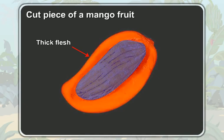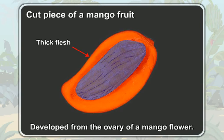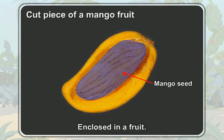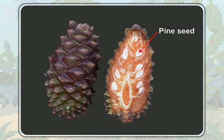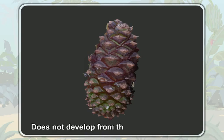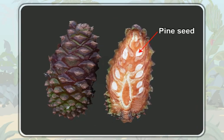The mango seed is surrounded by the thick flesh of a mango fruit. Actually, the thick flesh of a mango fruit is derived from the ovary of a mango flower. So, the mango seed is enclosed in a fruit. Now, look at this pine seed. It is enclosed inside a structure that has scales. This structure does not develop from the ovary of a flower. Hence, it is not a fruit. As the fruit does not cover the pine seed, we say the pine seed is naked.